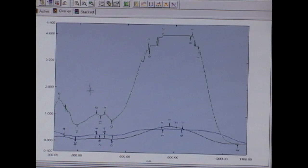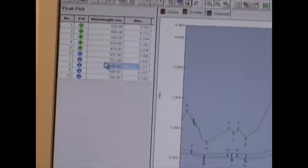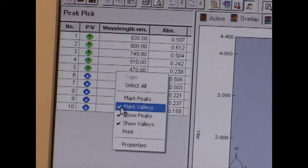If you don't want to see all the peak information, you do right click and unselect marked peaks and valleys for current spectrum.